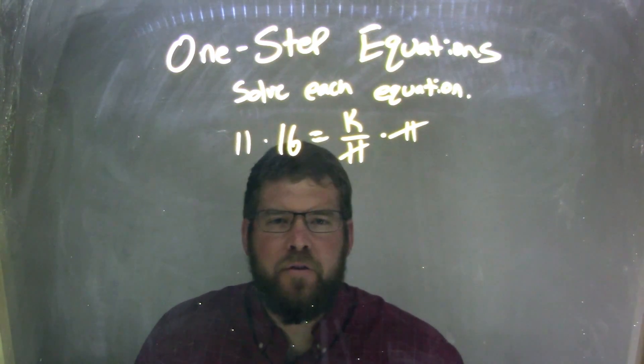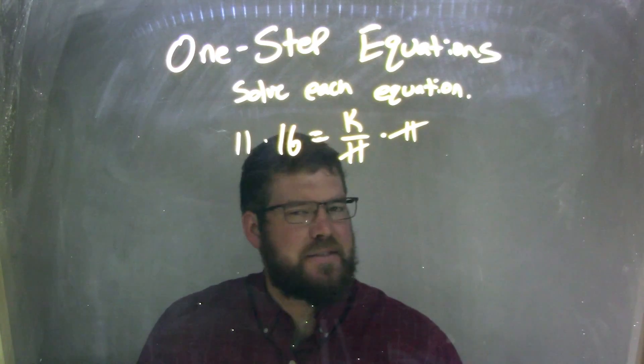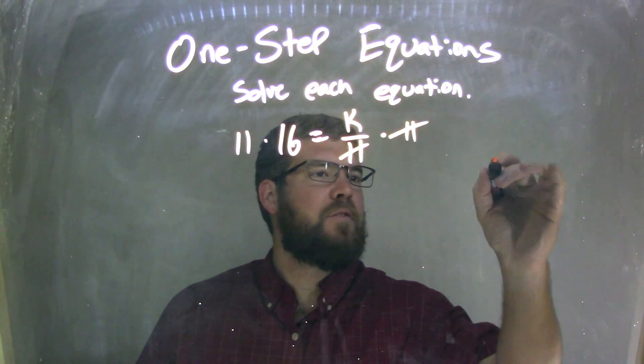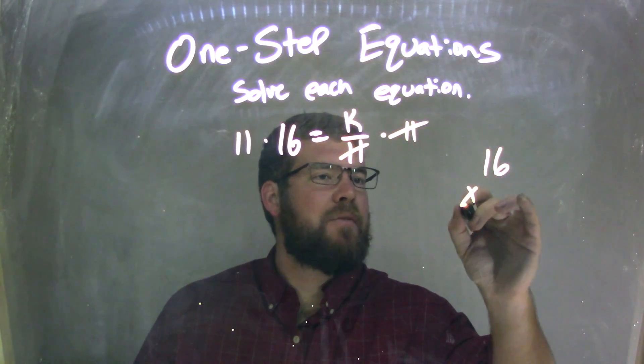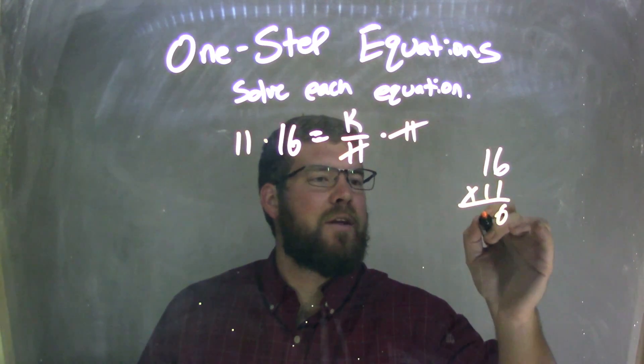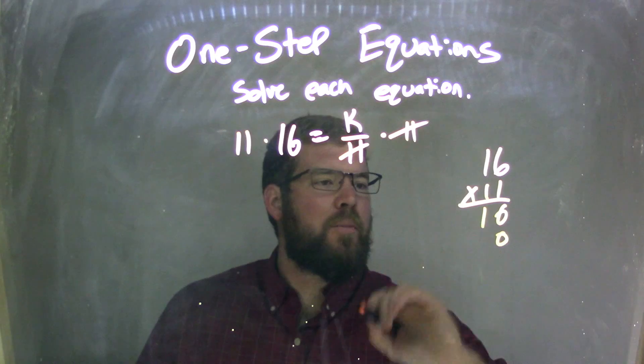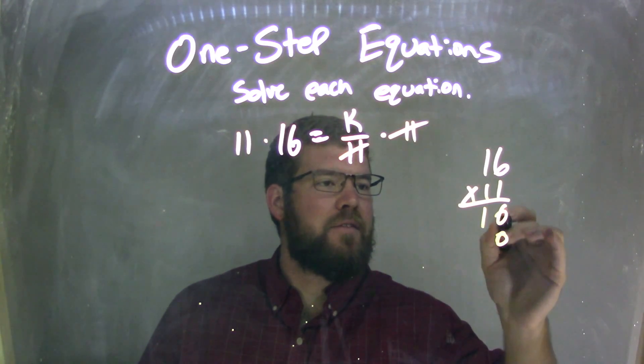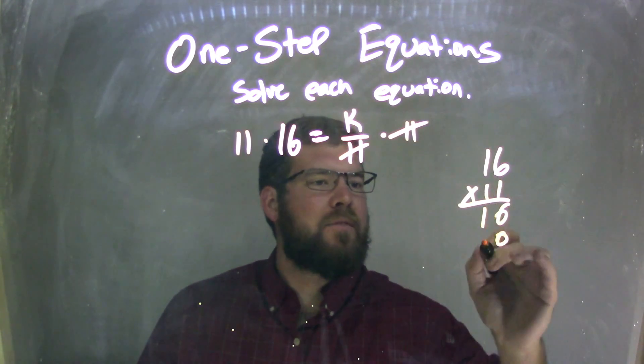And remember, order doesn't matter when we multiply. 16 times 11 is the same thing as 11 times 16. So if I had 16 times 11, 1 times 6 is 6, 1 times 1 is 1, 0 place value here, it's not a 6, it's a 0.